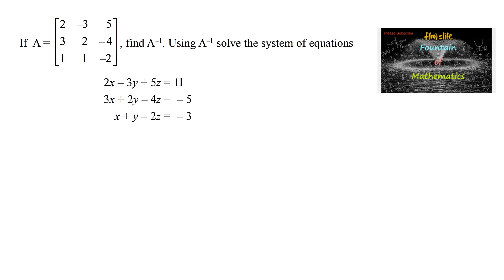If A is equal to the matrix [2, -3, 5; 3, 2, -4; 1, 1, -2], find A inverse. Using A inverse, solve the system of equations: 2x minus 3y plus 5z equals 11, 3x plus 2y minus 4z equals negative 5, and x plus y minus 2z equals negative 3.